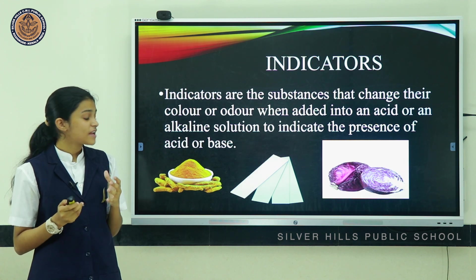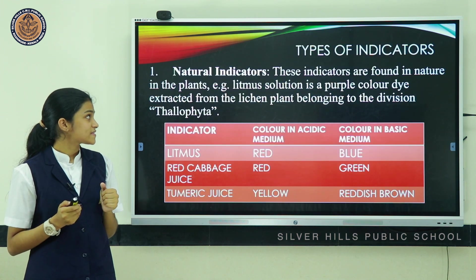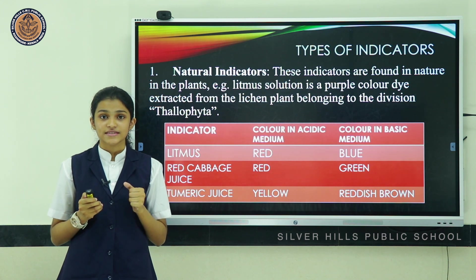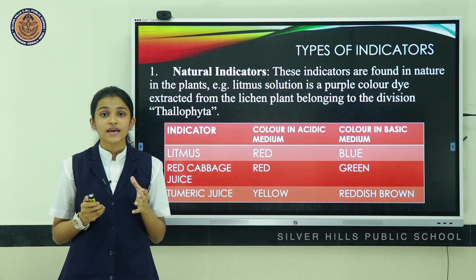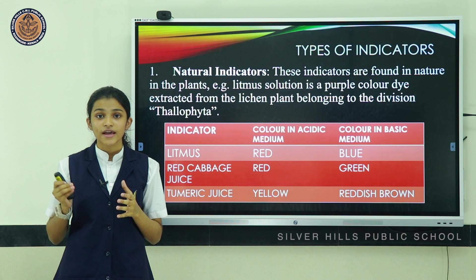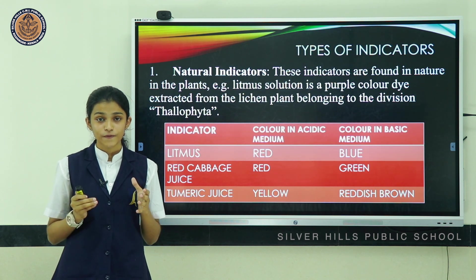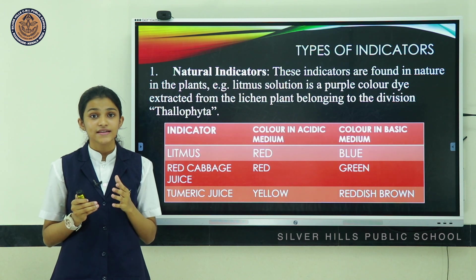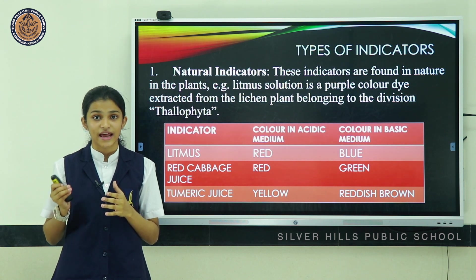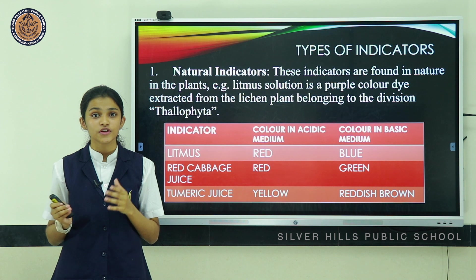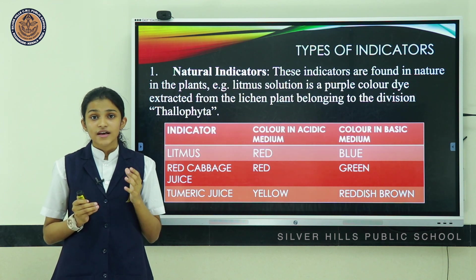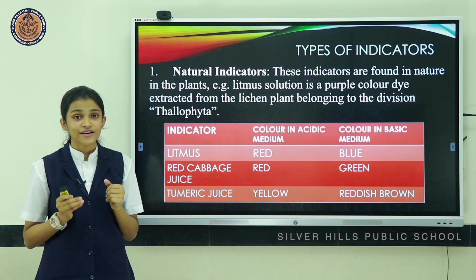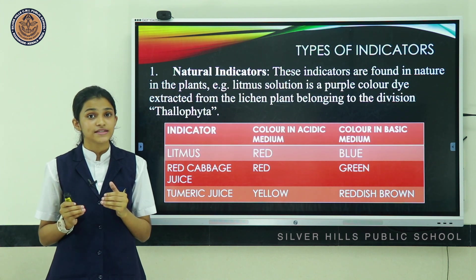Indicators can be classified in the following ways. The first type is natural indicators — these are found in nature, in plants. For example, litmus solution is a purple color dye extracted from the plant lichen, belonging to the division Thallophyta. Some natural indicators along with their characteristic colors are provided in the table.